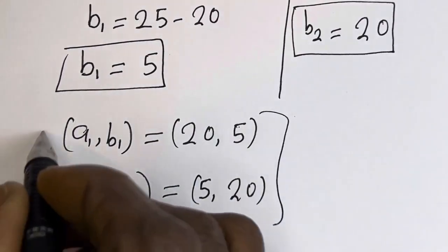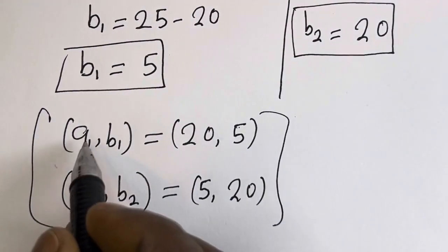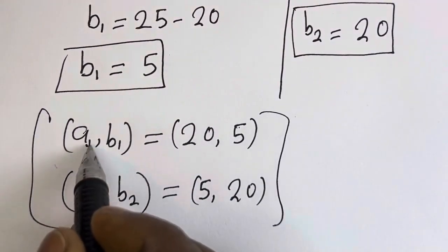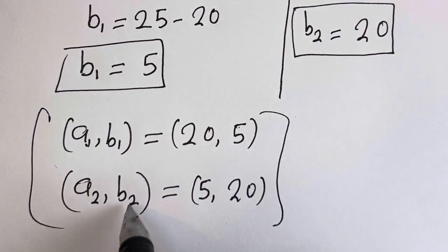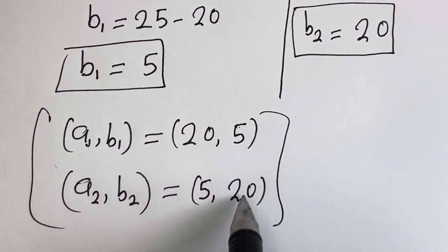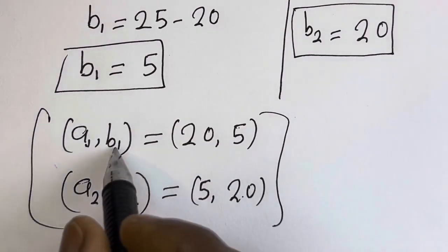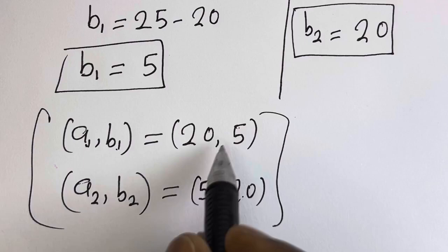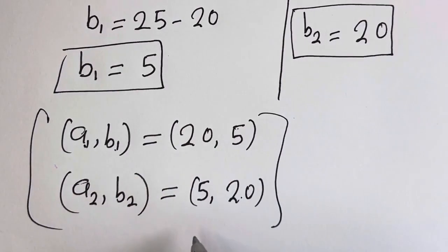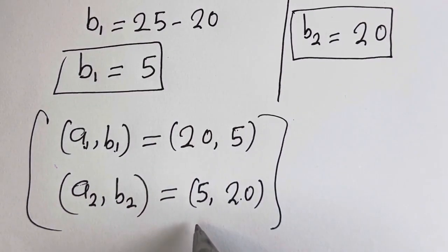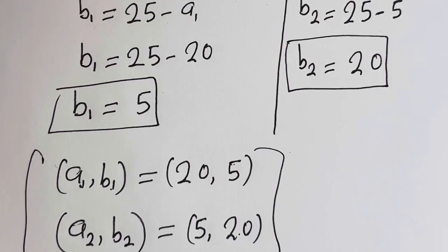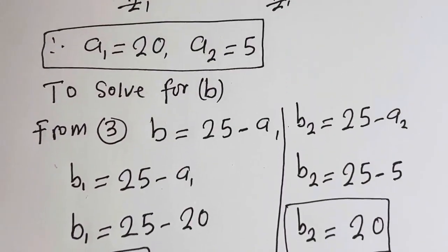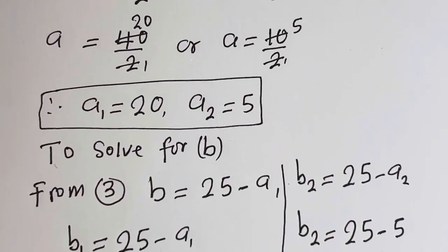These are the final answers. You can see that the value of A1 is equal to the value of B2, and the value of B1 is equal to the value of A2. I hope you enjoyed this video. Thank you for watching — please don't forget to like, share, comment, and subscribe to my channel.